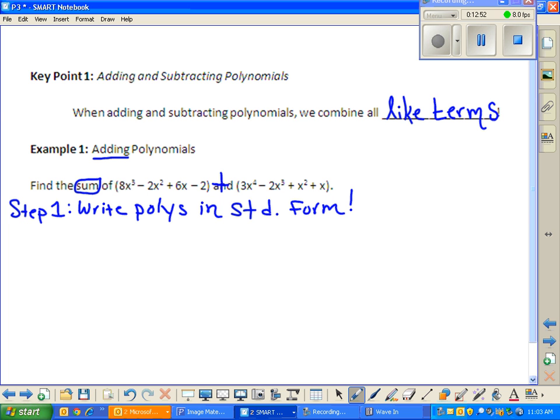So if you take a look, we want to just make sure we go decreasing order of exponents. If there's any missing terms, we can always insert a placeholder. So my first term, or my first polynomial rather, goes 8x cubed minus 2x squared plus 6x minus 2. 3, 2, 1, 0. That first polynomial, already written in standard form. Second polynomial, 3x to the 4th minus 2x to the 3rd plus x squared plus 1x plus no constants. It goes 4, 3, 2, 1, and then x to the power of nothing. That's also in standard form. I'm going to show you two methods.